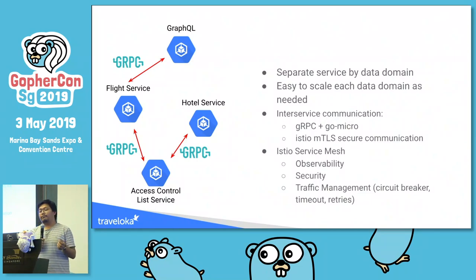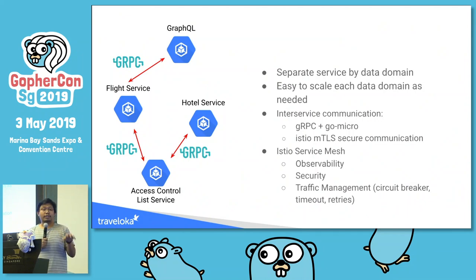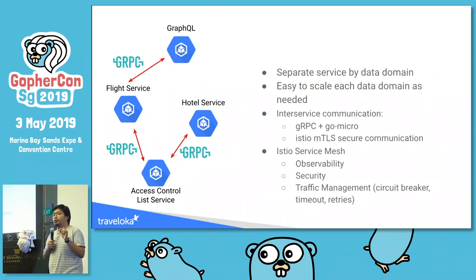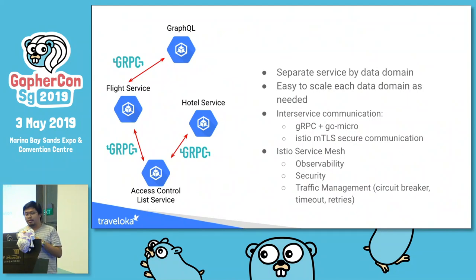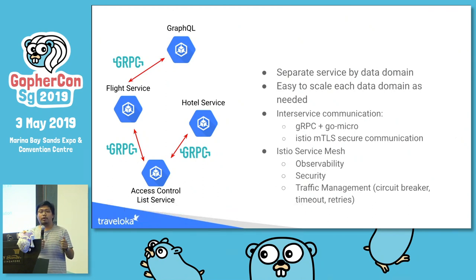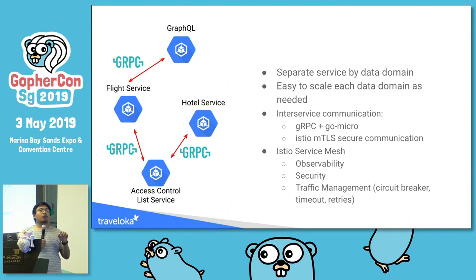Istio provides three important benefits. First, observability — you can monitor what's happening within the service mesh: latency, number of requests, and so on. Second, security — traditionally you'd install TLS on every service, but with Istio the control plane generates certificates for services within the mesh automatically. Third, traffic management features like circuit breaker, timeout, and retry — so you don't need to write that code yourself. You can focus purely on business logic.